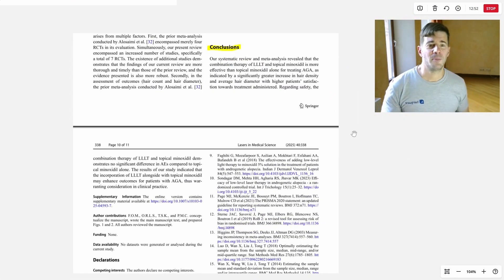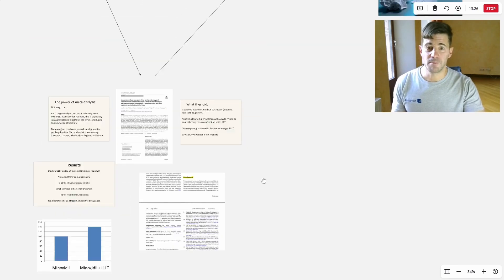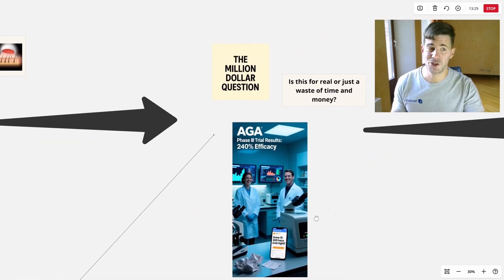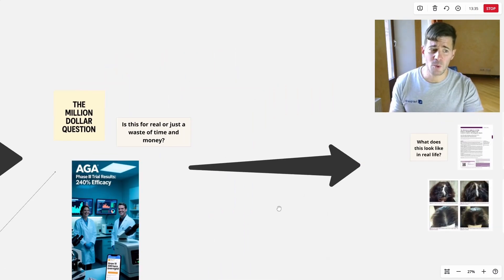So the conclusions, I'm going to read a bit from the study here. Our systematic review and meta-analysis revealed that the combination therapy of LLLT and topical minoxidil is more effective than topical minoxidil alone for treating androgenetic alopecia, as indicated by a significantly greater increase in hair density and average hair diameter. And further down, they say, the results of our study indicated that the incorporation of LLLT alongside with topical minoxidil may enhance outcomes for patients with androgenetic alopecia. So that was their takeaway. This study helps us answer the million dollar question with a pretty high degree of certainty that yes, it is worth it. And yes, it is real. And it's not a waste of time and money.